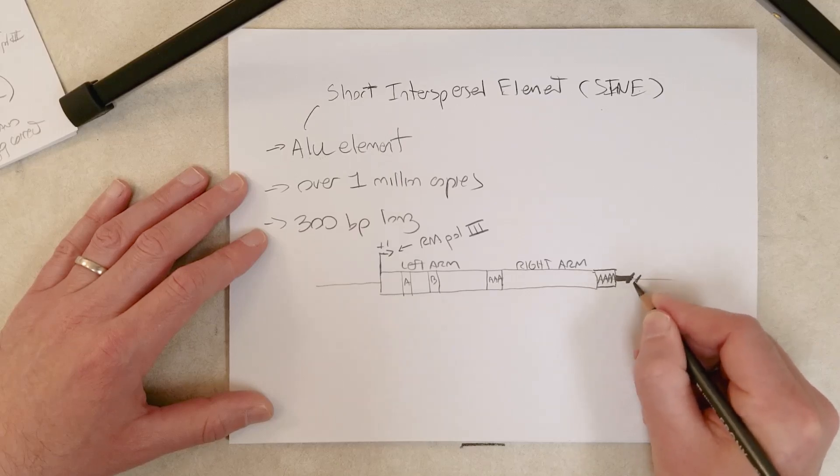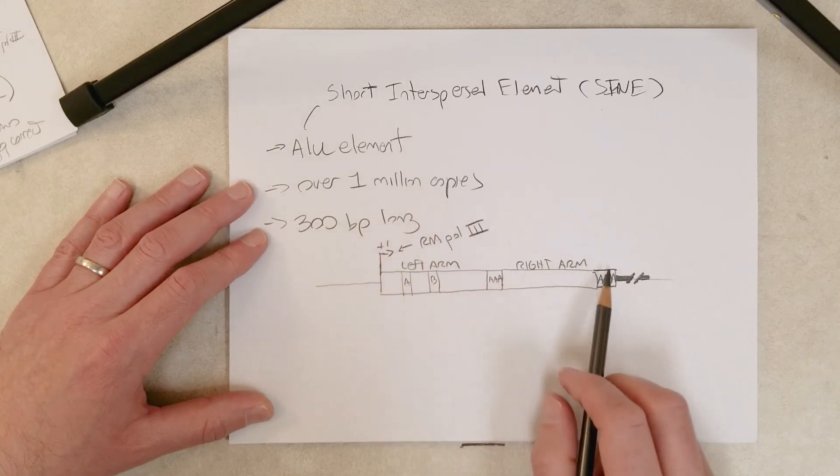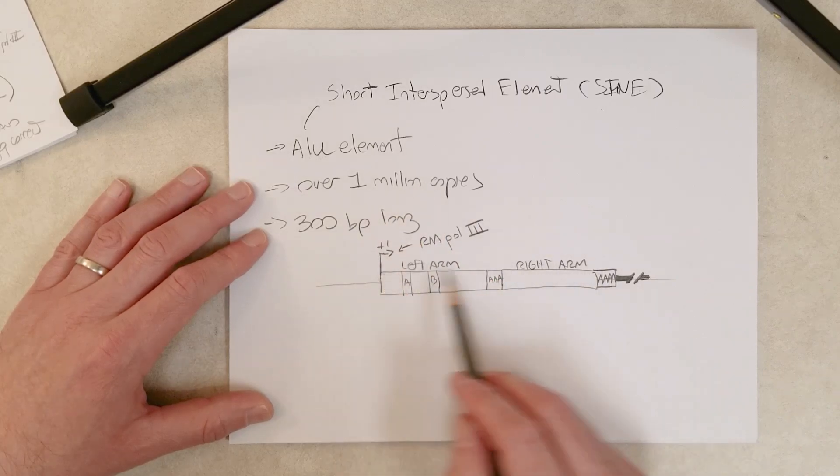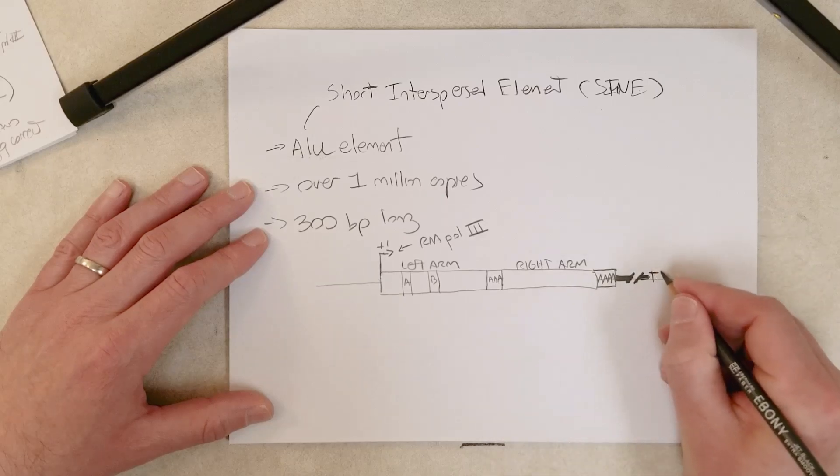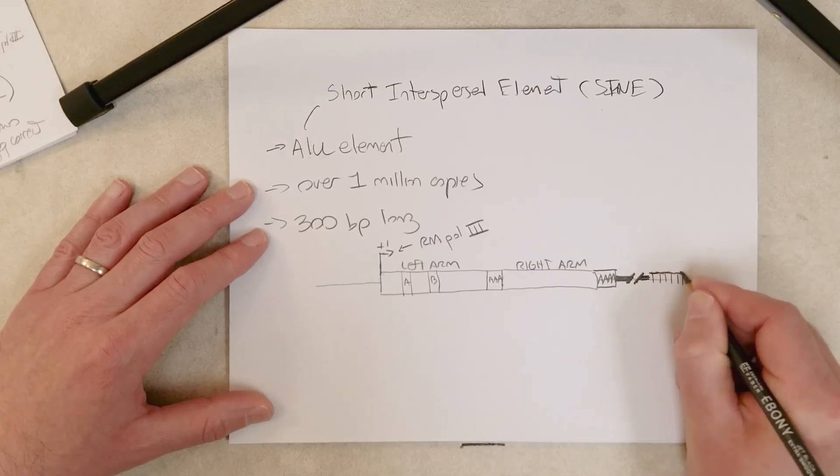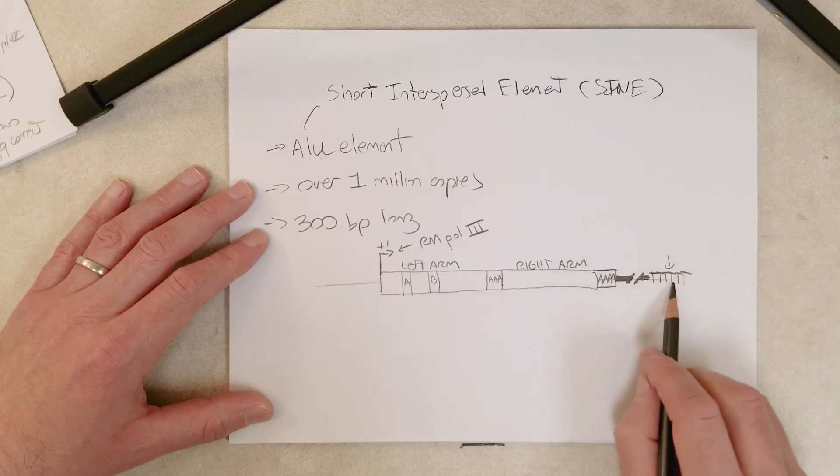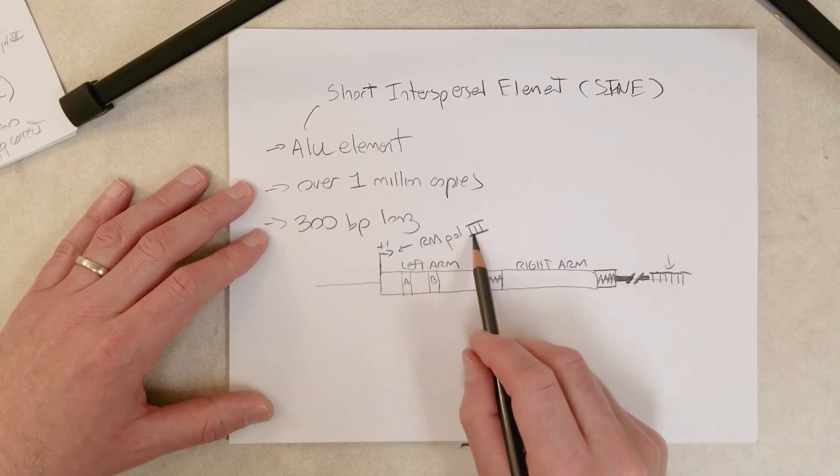There's a variable sequence of variable length depending on the 1 million copies. They're very similar between this A region and the plus one site, but variable after this A rich region. They end with a stretch of Ts, which is the traditional termination signal for RNA polymerase three.